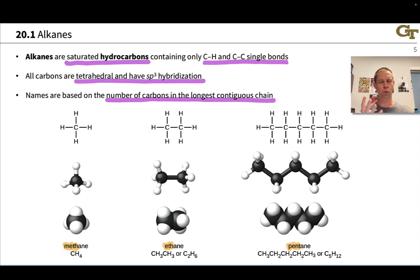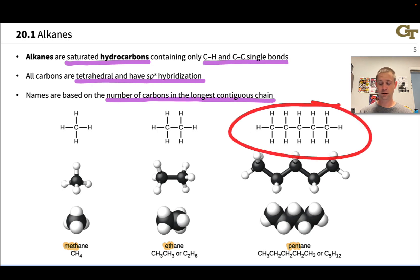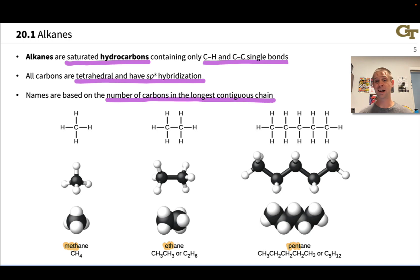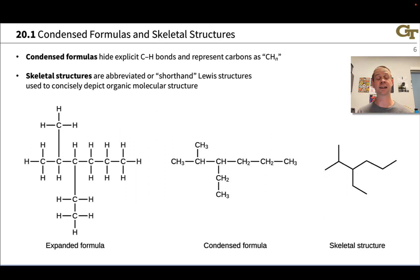Generally, once you get above four carbons you're looking at the typical Greek prefixes: pent, hex, hept, oct, etc. Now the structure of pentane in particular makes the point that organic compounds can contain a lot of atoms — a lot of Cs and Hs in this Lewis structure. But they tend to follow patterns: carbon satisfies the octet rule, hydrogen forms one and only one bond, and these patterns recur over and over in organic molecules. This is why we use condensed formulas and skeletal structures to compress the information in a full Lewis structure into a smaller, more manageable, and still readily understood form.